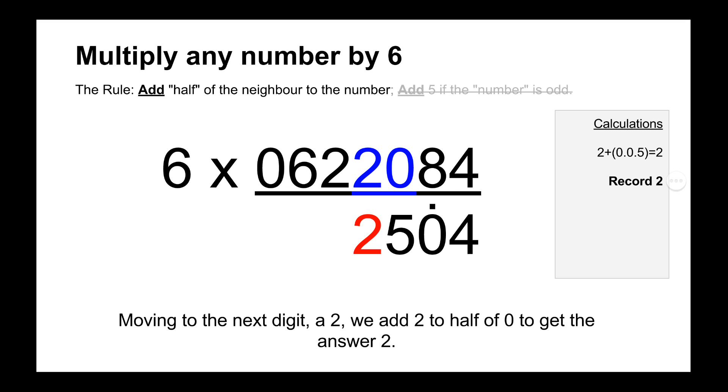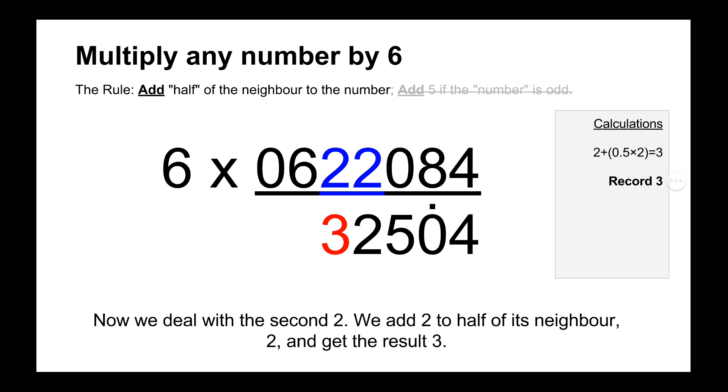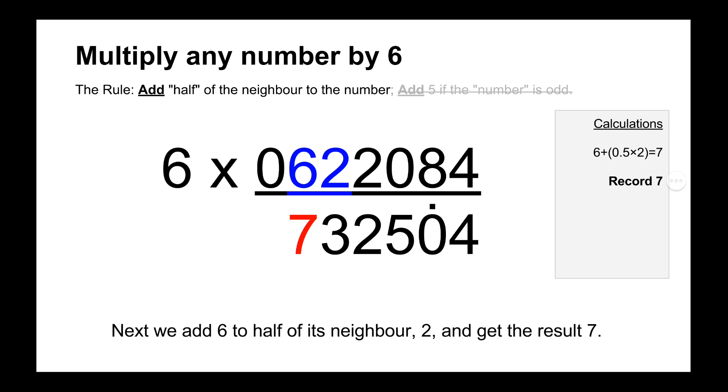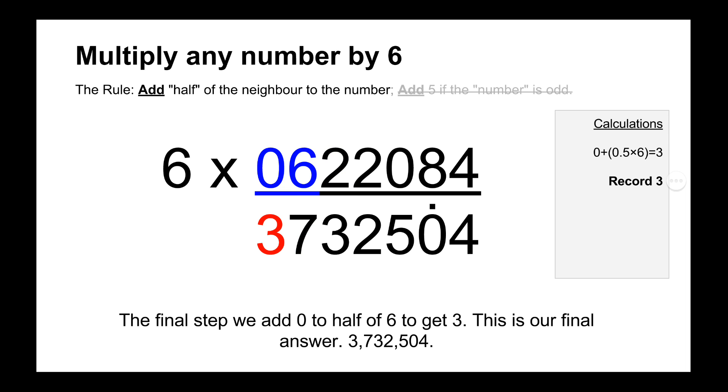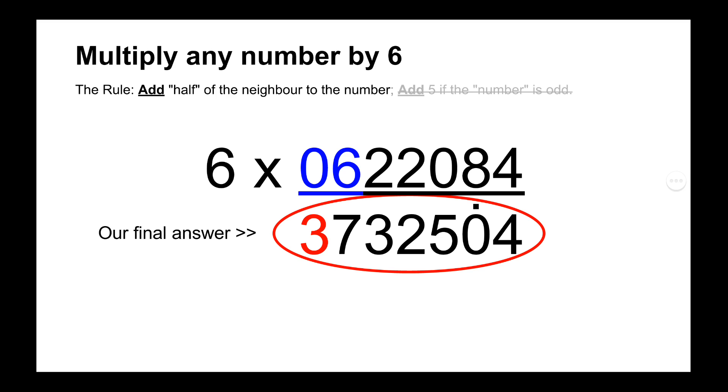And then we move across to number 2. And we do half of its neighbour 0, which is still 0. So we just record the 2. And then moving across again is another 2. And we do half of its neighbour, the previous 2, which is 1, plus 2 equals 3. So we record the 3. And then 6, we do half of its neighbour 2 is 1. So 6 plus 1 equals 7. So we record the 7. And then we move across to the last number, which is 0. And we do half of its neighbour 6 equals 3. So 3 plus 0 is 3. And that's our final answer, 3,732,504.